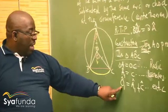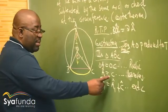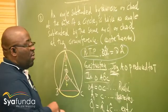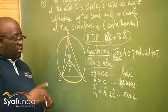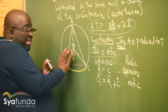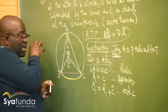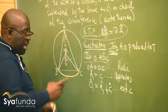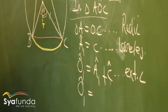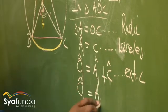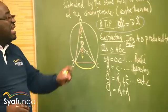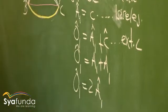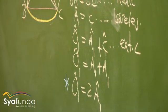We have O1 equals A1 plus C. But we've just said A1 is the same as C. What we want to prove has nothing to do with C — we want to prove it in terms of A. So we get rid of C by replacing it with A1. Therefore O1 equals A1 plus A1, which gives us O1 equals 2 angle A1. This is the vital step.